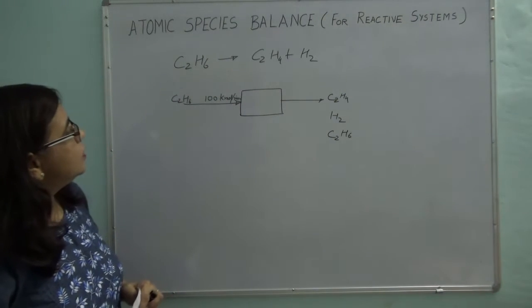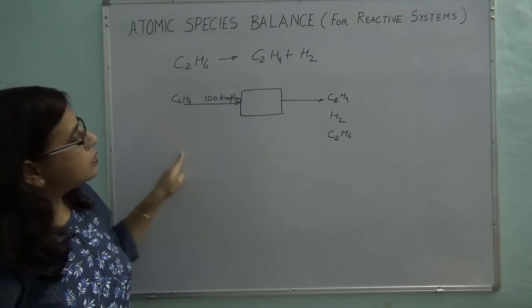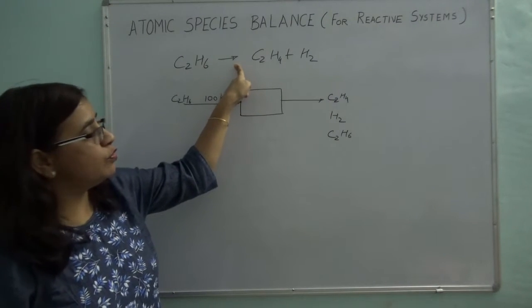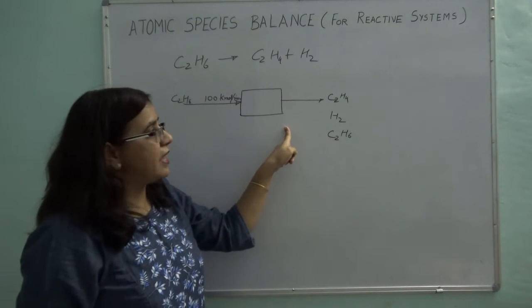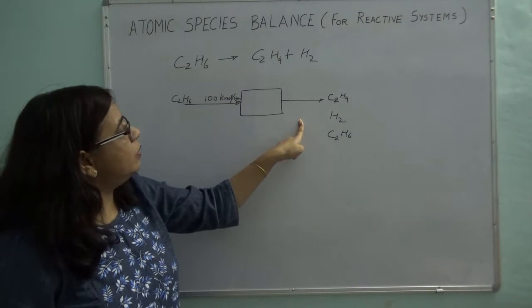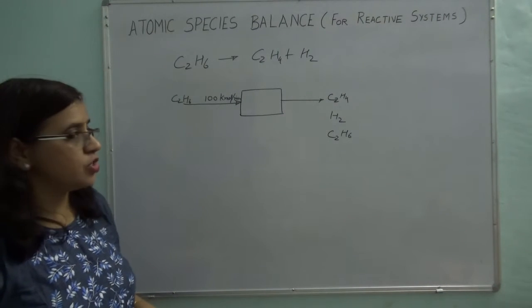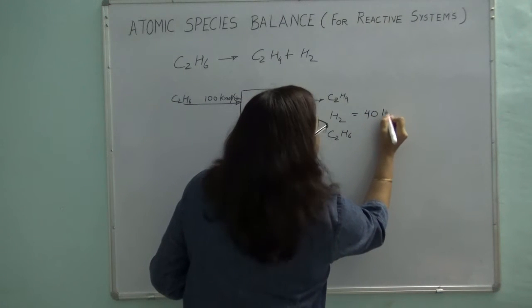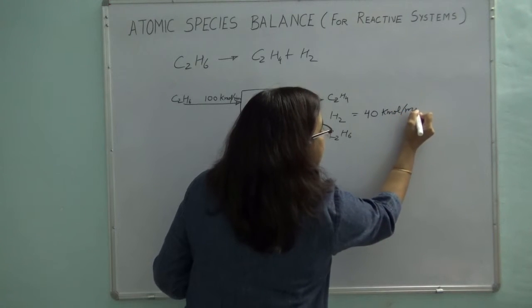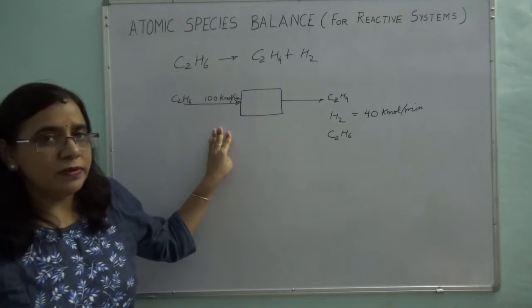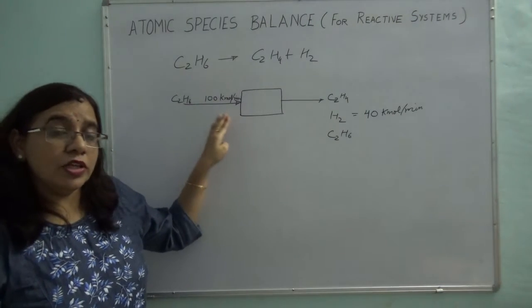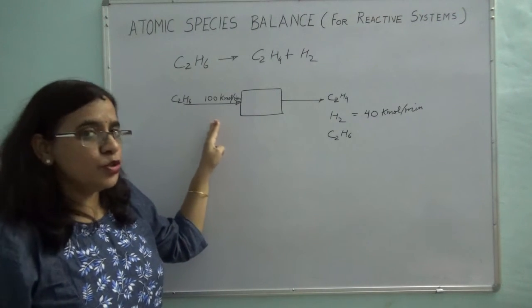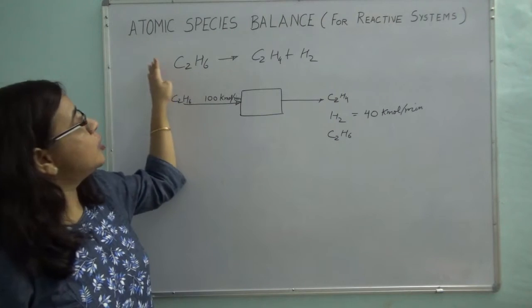Right now this problem is underspecified because I have three unknowns plus one more, so four unknowns total. Even if I apply molecular species balance, I have four unknowns and only three independent balance equations. So I am going to specify one more flow rate: 40 kilomoles per minute of hydrogen is coming out in the product. Today I will focus on atomic species balance.